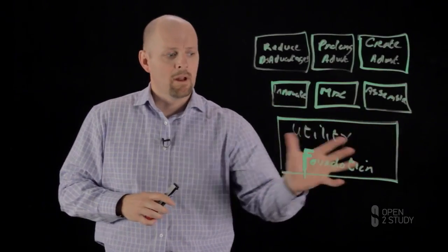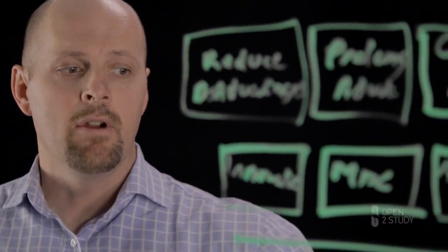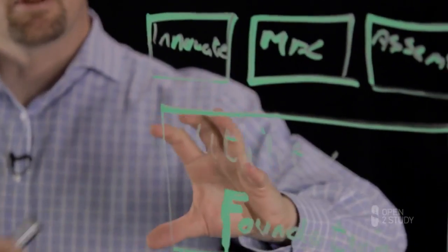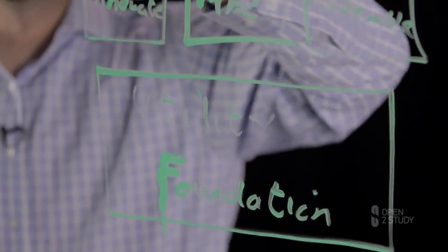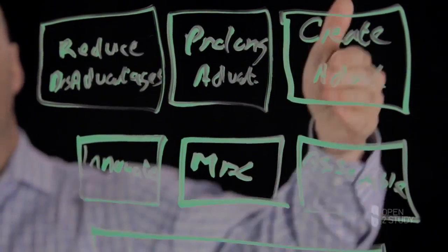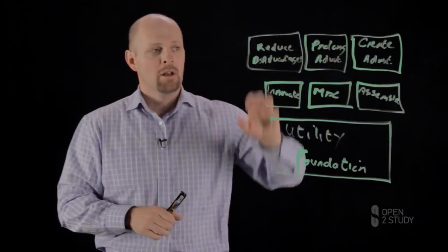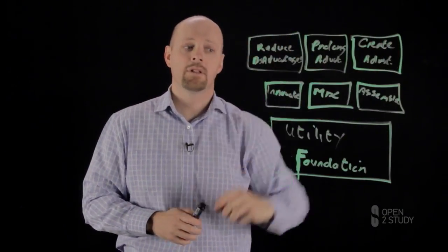What you have at the bottom here is what we refer to as the utility or foundation of a business. The point we're trying to demonstrate is that there's common stuff within an organization that helps it deal with these three aspects: reducing disadvantages, prolonging advantages, and creating or building advantages. That's what business is about - how they manipulate those advantages and disadvantages.